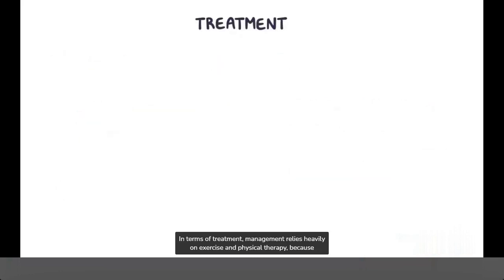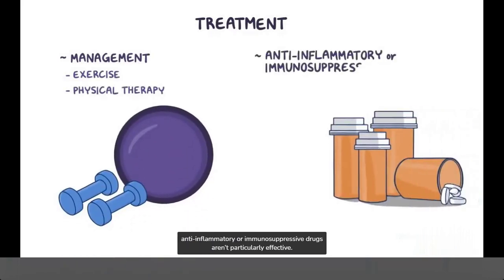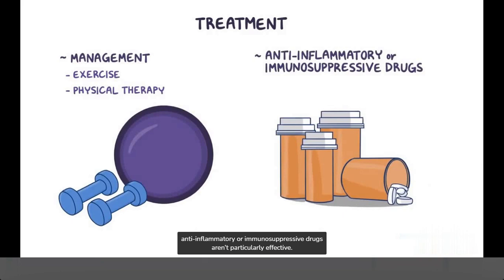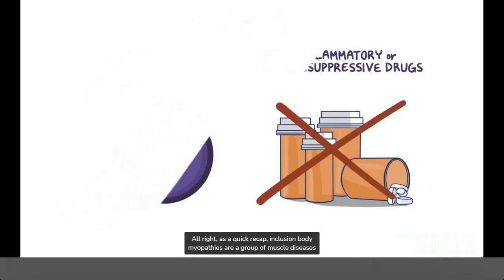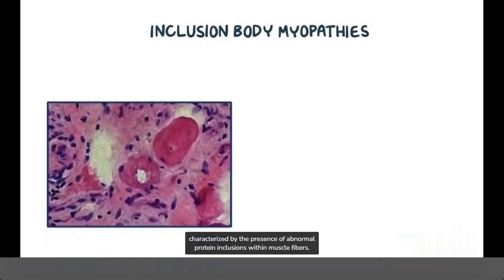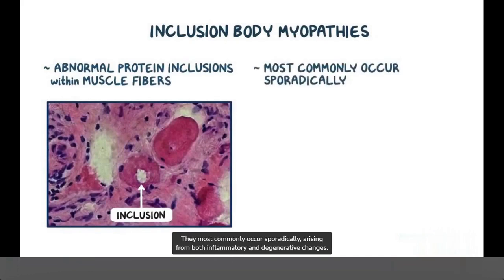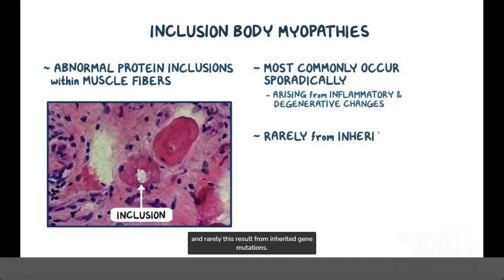In terms of treatment, management relies heavily on exercise and physical therapy, because anti-inflammatory or immunosuppressive drugs aren't particularly effective. As a quick recap, inclusion body myopathies are a group of muscle diseases characterized by the presence of abnormal protein inclusions within muscle fibers. They most commonly occur sporadically, arising from both inflammatory and degenerative changes, and rarely, this results from inherited gene mutations.